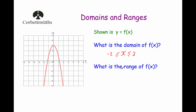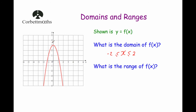Now for the range — what are the heights of the function? What values have been generated when the function's been applied? As you can see from the graph, the highest point of the function is 3, and the lowest point is negative 5. So let's write that as an inequality: the range of the function is bigger than or equal to negative 5, but f(x) is less than or equal to 3.